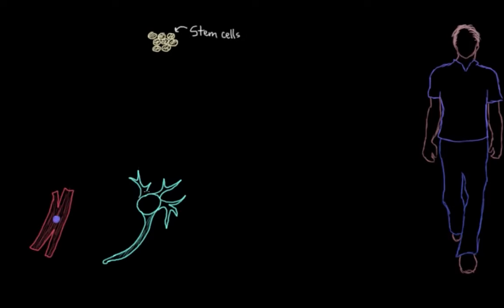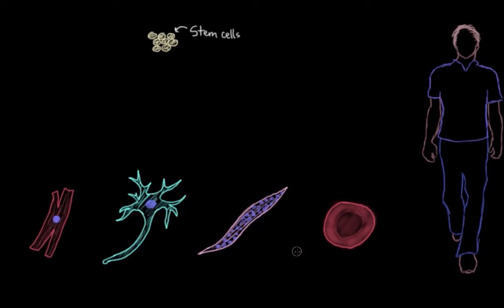You've probably heard of stem cells by now. And you probably know that every cell in our body, whether it's a muscle cell or a nerve cell or a skin cell or a red blood cell or any other type of cell, they all came from a common group of stem cells during development.